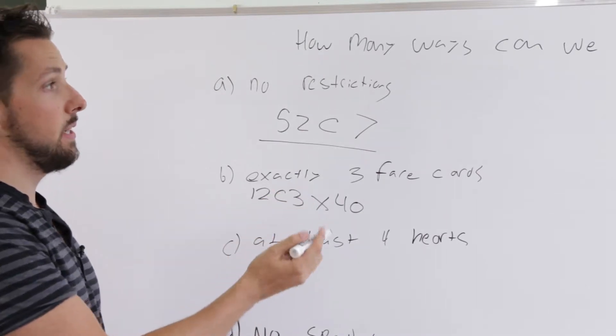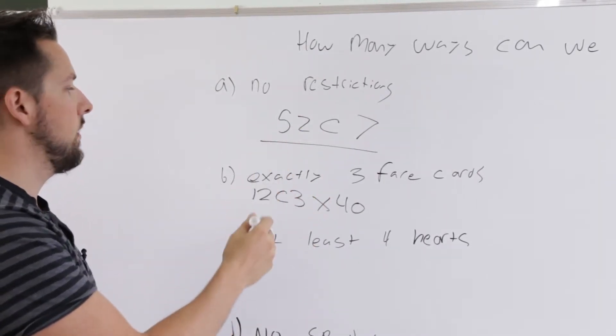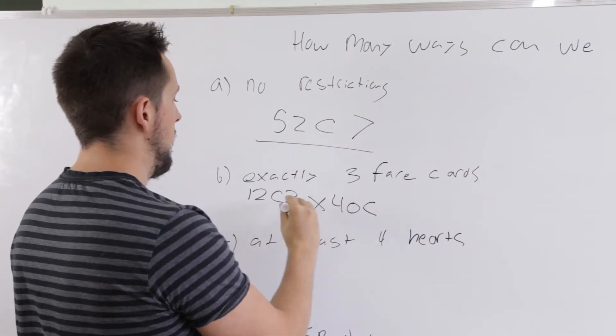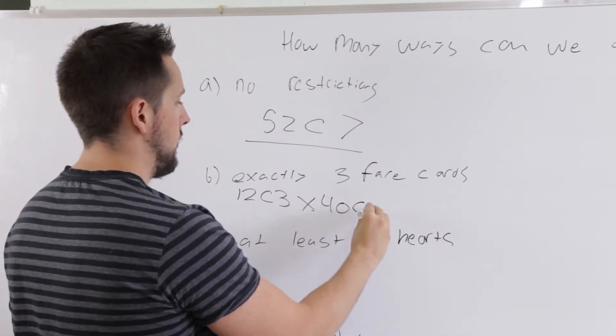And now how many do we need to round out the hand we're getting? Only four because we already have three. So it's 40 choose four.